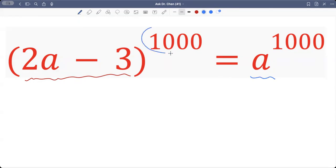Both sides being raised by 1000, so what we could do is just take the index. We take the 1000th root, so basically we take 1000th root on both sides.